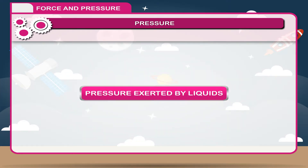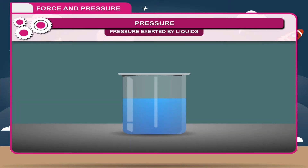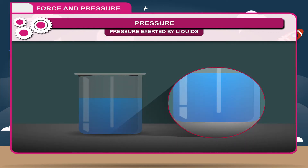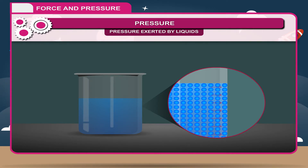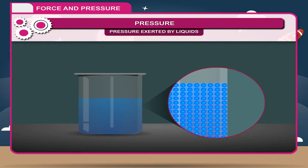5. Pressure exerted by liquids: A liquid contained in a vessel exerts pressure at the base of the vessel due to the weight of the liquid, and exerts pressure on the walls of the vessel due to collision between the molecules of the liquid and the vessel. Since the molecules of a liquid are continuously in motion, they strike regularly with the walls of the container, exerting a thrust on the walls and thus exerting pressure.